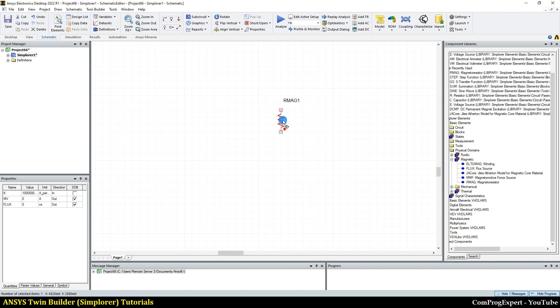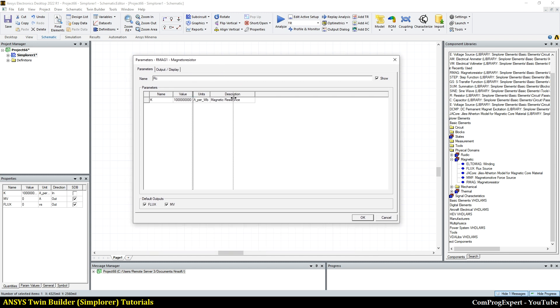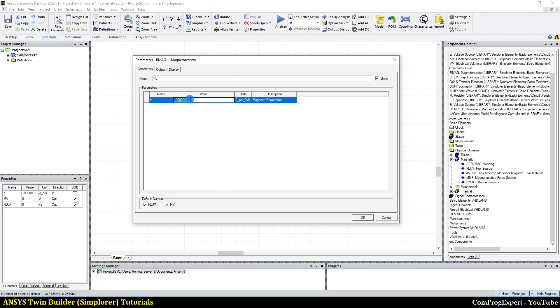So here is the reluctance. Let's change the name, this is the reluctance of the core. And we should set the value of the reluctance. The unit is ampere per Weber. The unit of the reluctance is ampere per Weber, that is equal to 3.79 times 10 to the power three. So 3.79 E3.